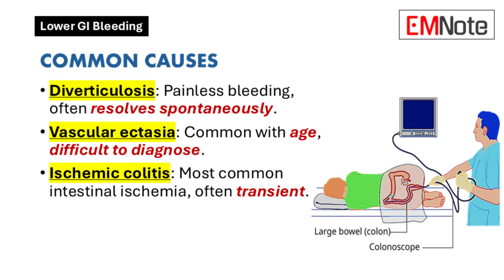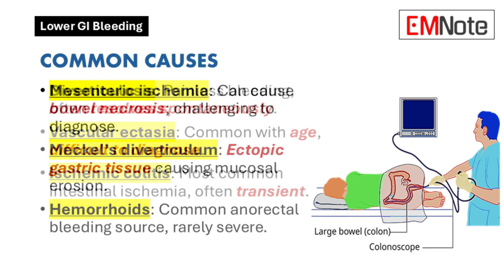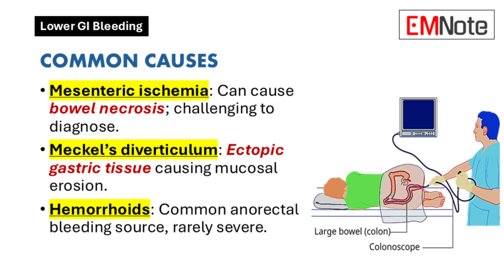Ischemic colitis is the most frequent cause of intestinal ischemia. This condition is typically transient and can be diagnosed using endoscopy. Mesenteric ischemia, on the other hand, can lead to bowel necrosis and requires a high level of clinical suspicion due to its nonspecific presentation, which may mimic other intra-abdominal conditions.